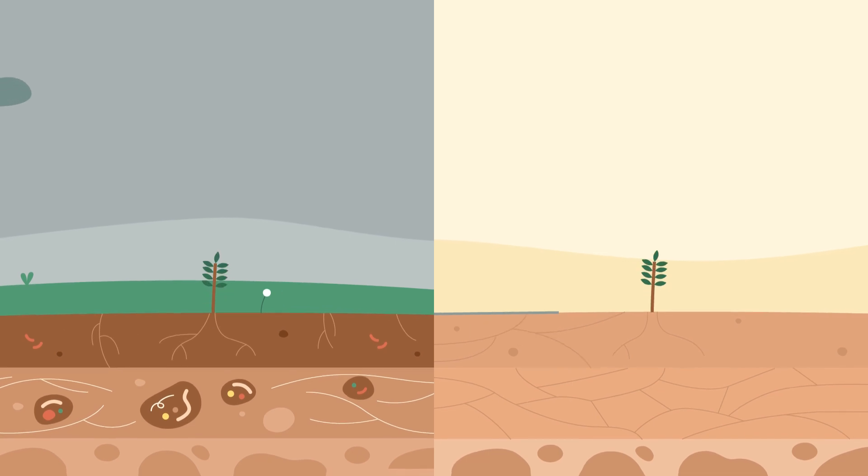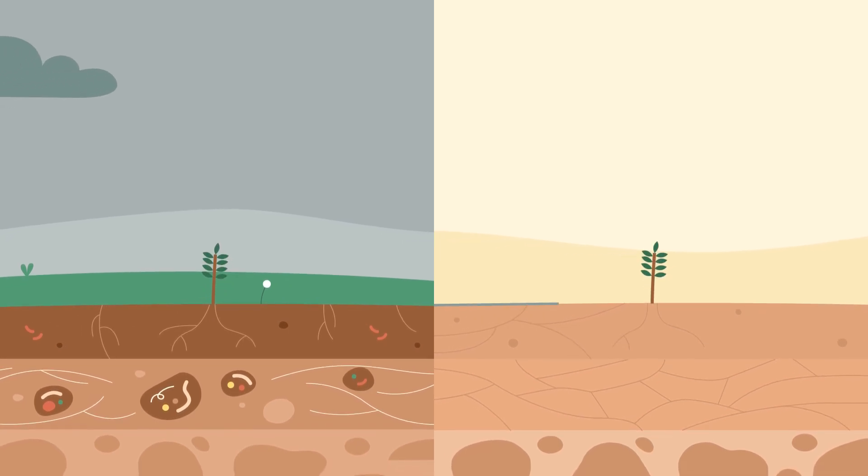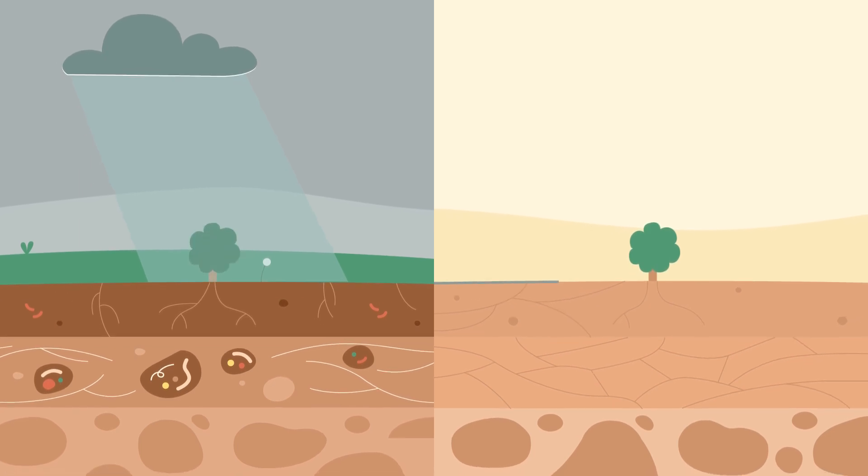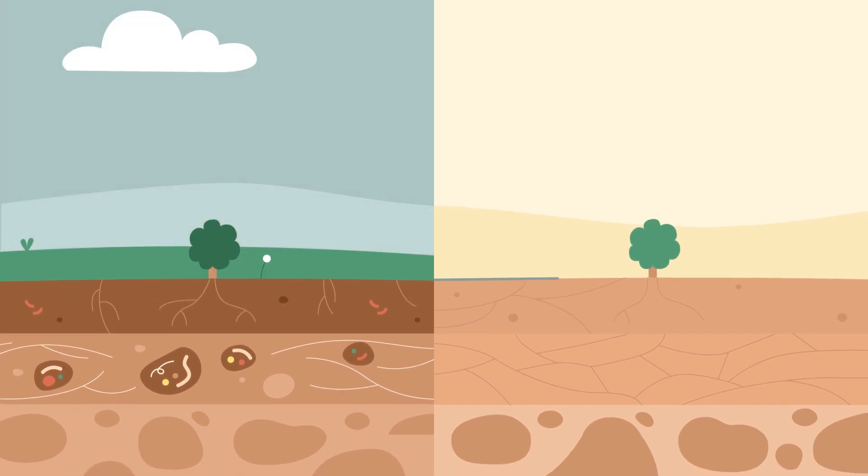The early years in a regenerative organic system are tough, and few take on the challenge. A young tree is vulnerable and requires careful attention. In a conventional model, it grows alone, without threat, as long as it's fed synthetic inputs.